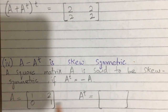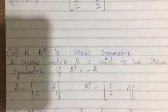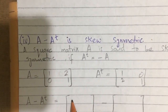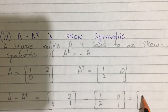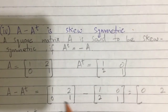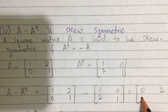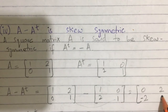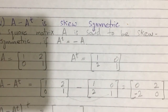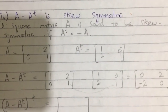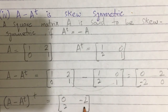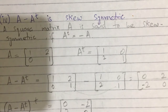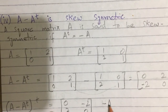So A is [1, 0; 2, 1] and A transpose is [1, 2; 0, 1]. Now A minus A^T: [1, 0; 2, 1] minus [1, 2; 0, 1]. We get 1-1=0, 2-0=2, 0-2=-2, and 1-1=0. So A minus A^T equals [0, 2; -2, 0].